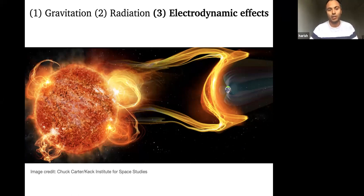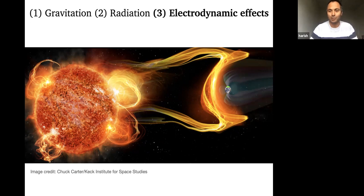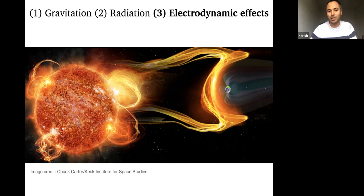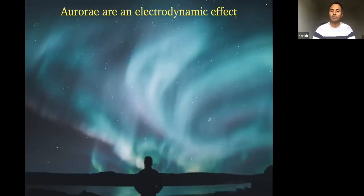Stars and planets interact mainly via three mechanisms. First is gravity — that's what makes planets orbit, creates tides. Second is radiation — we feel that most directly, the sun heats us. Third, which we don't feel in everyday life but is extremely important accumulating over billions of years, is electrodynamics — plasma and magnetic fields. These are crucial in determining whether a planet can host life, what atmosphere it can have, what chemistry the atmosphere supports, and the rate of atmospheric erosion.